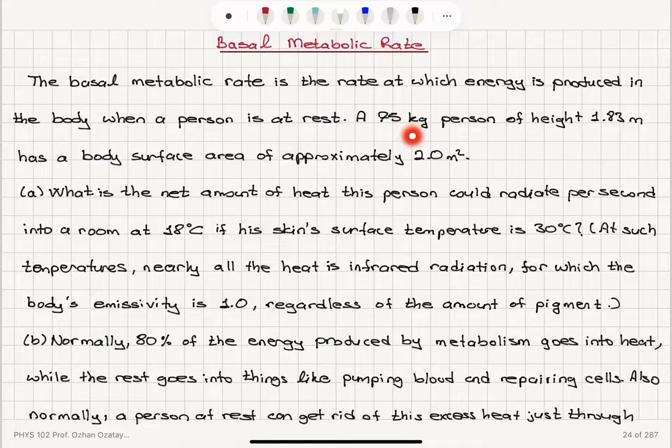A 75 kilogram person of height 1.83 meters has a body surface area of approximately 2 meters squared. Part A.